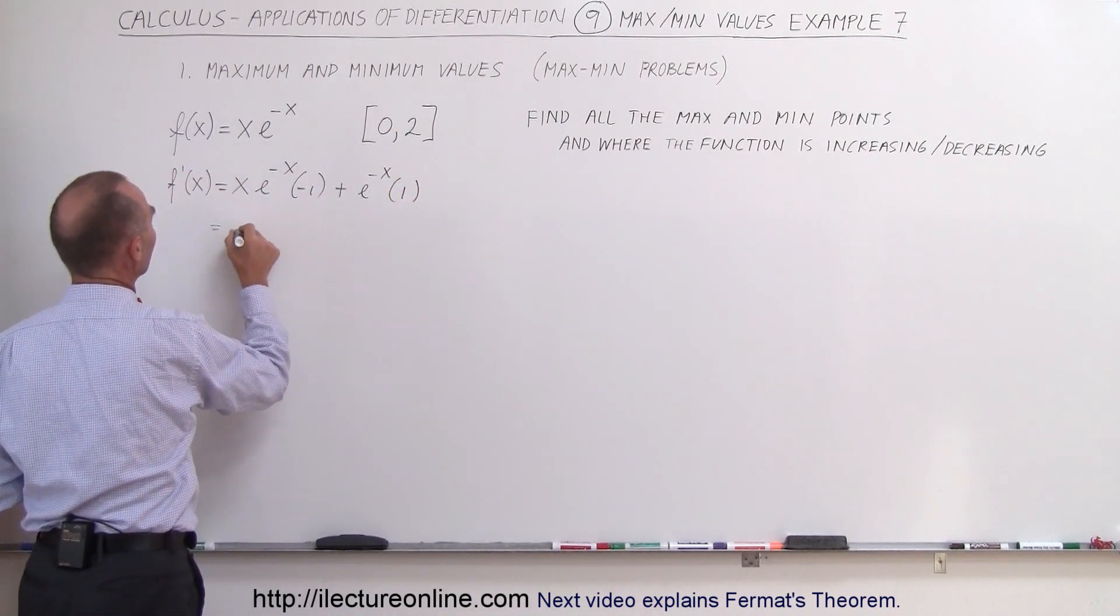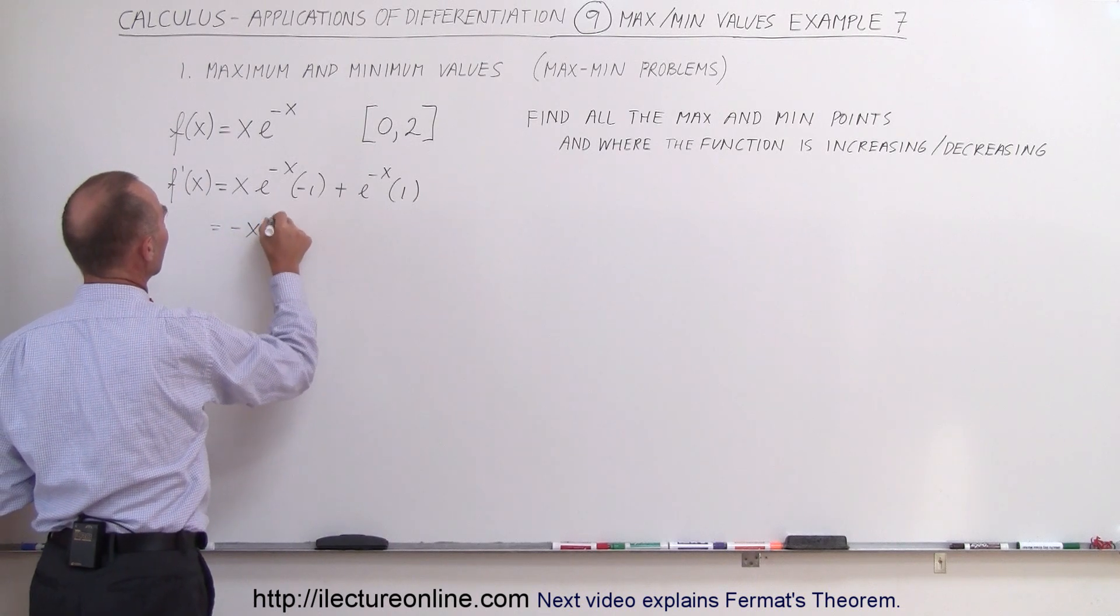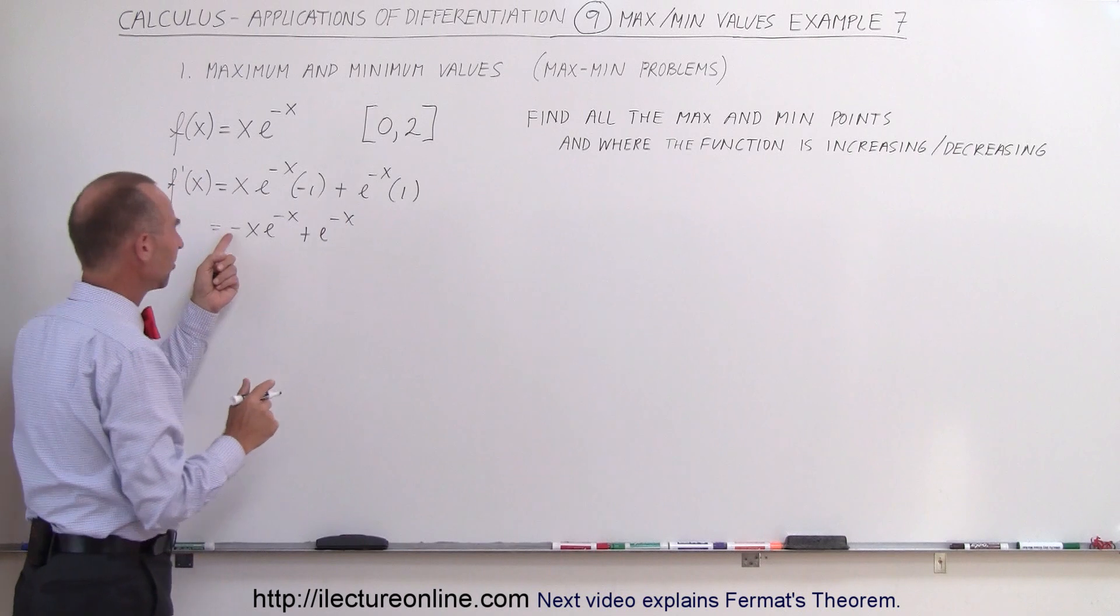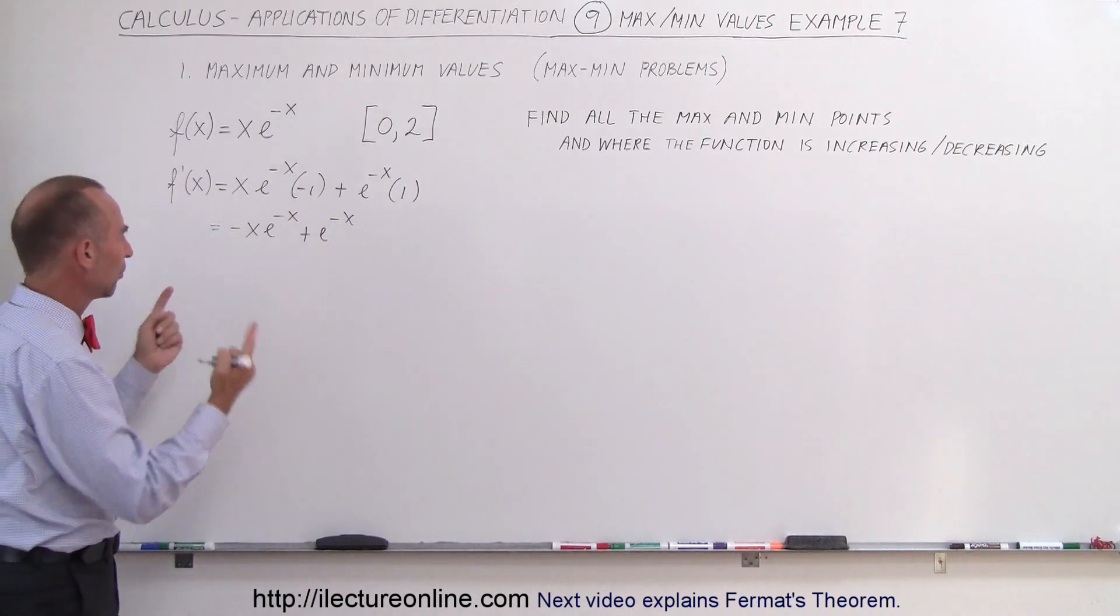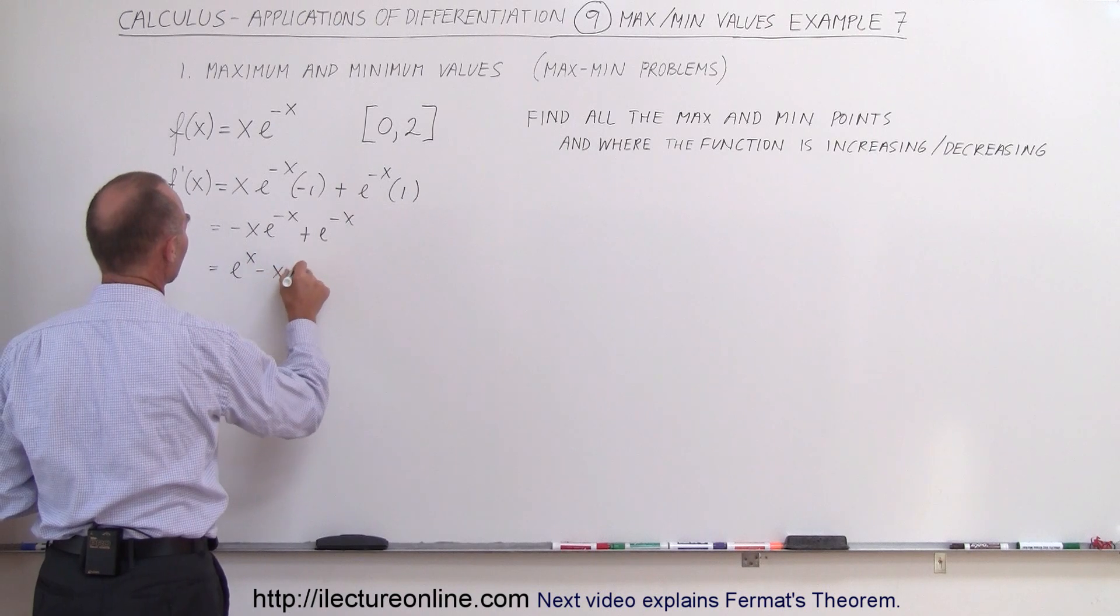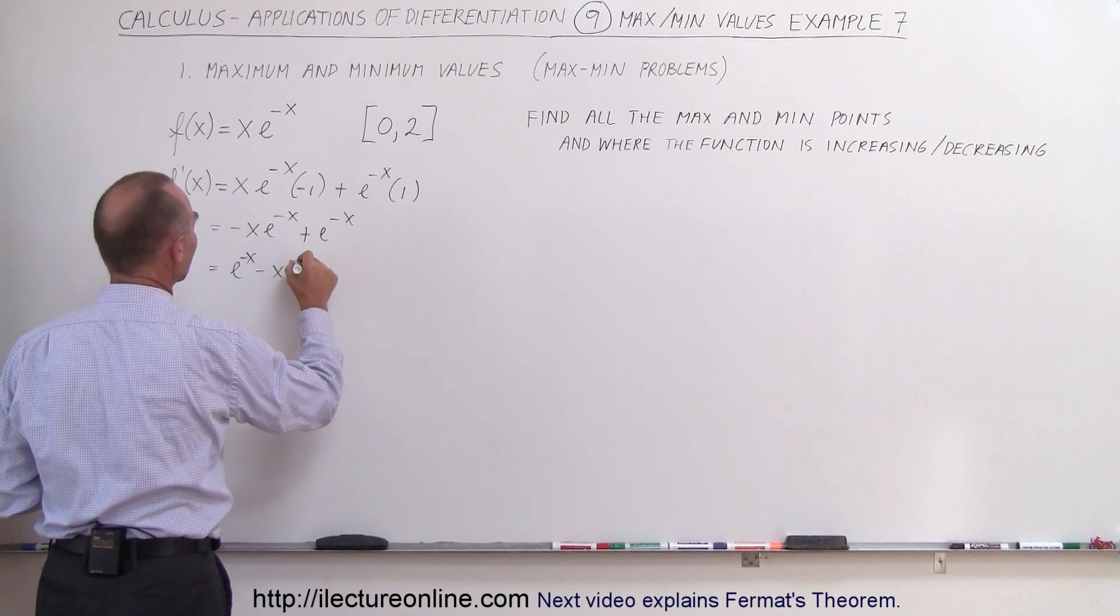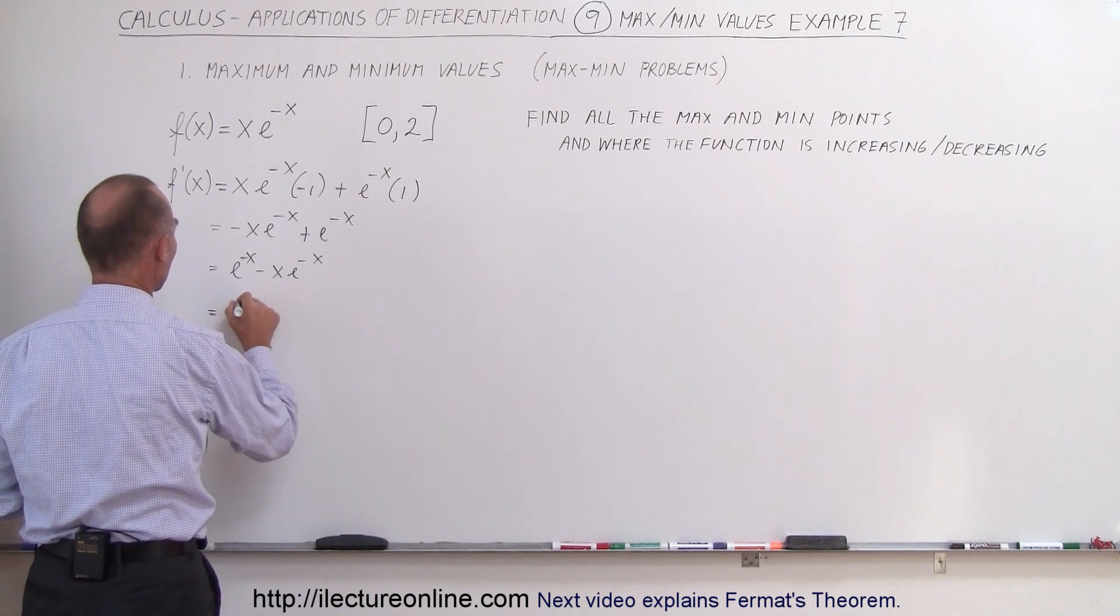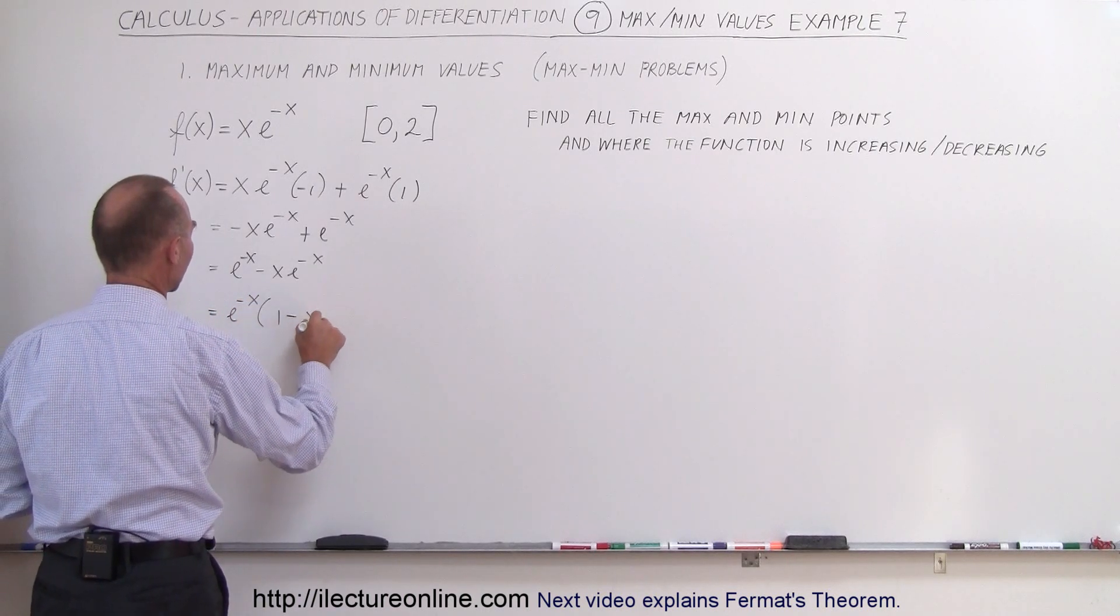Simplify this a little bit: this equals -x·e^(-x) + e^(-x). I like to flip those around and write this as e^(-x) - x·e^(-x). Then you can factor out e^(-x), so this is e^(-x)·(1-x).